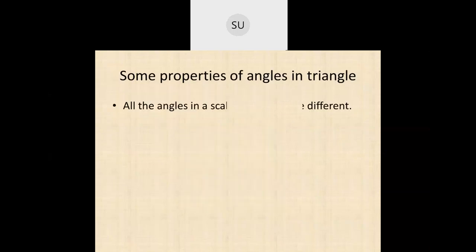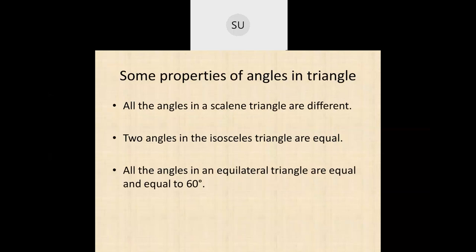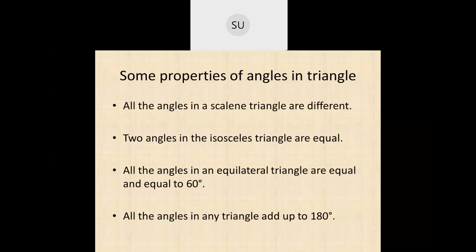Some properties of triangles: all angles in a scalene triangle are different; two angles in an isosceles triangle are equal; all angles in an equilateral triangle are equal to 60 degrees; and all the angles in any triangle add up to 180 degrees.